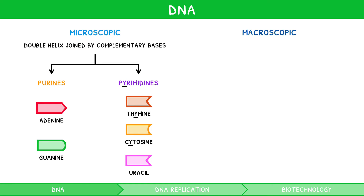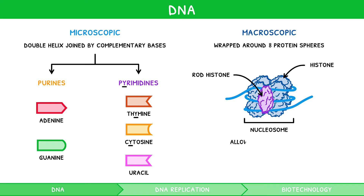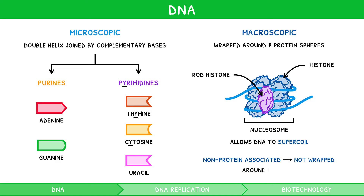On a macromolecular level, eukaryotic DNA is not found as long strands, but instead wrapped around eight protein spheres, each known as a histone, arranged into a cube. To stop it unravelling, there is a further rod histone which clamps the DNA in position. This combined structure is referred to as a nucleosome, and it allows DNA to supercoil. We have often referred to prokaryotic DNA as non-protein associated, i.e. naked — meaning it does not wrap around histones.